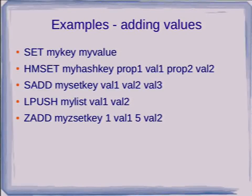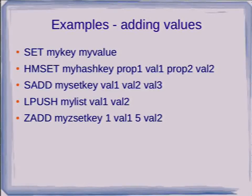Here are some examples. The first is setting a scalar value — you simply say SET, the name of the object, and the value. The second command is setting some values on a hash key — an arbitrary name and then a set of property name-value pairs. The third is adding some values to a set, the fourth is adding some values to the end of a list, and the fifth is setting some values in an ordered set.